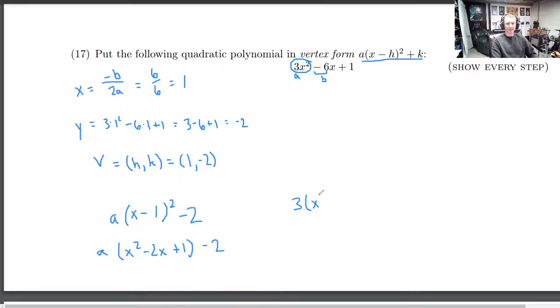3 times x squared minus 2x plus 1. Let's see if this just happens to give us what we need. The answer is, it will. This is 3x squared minus 6x plus 3. That's distributing throughout, minus 2, which is exactly what we need. 3x squared minus 6x plus just 1. So there we have it. That a, the mysterious a, which we also called a earlier, is 3.